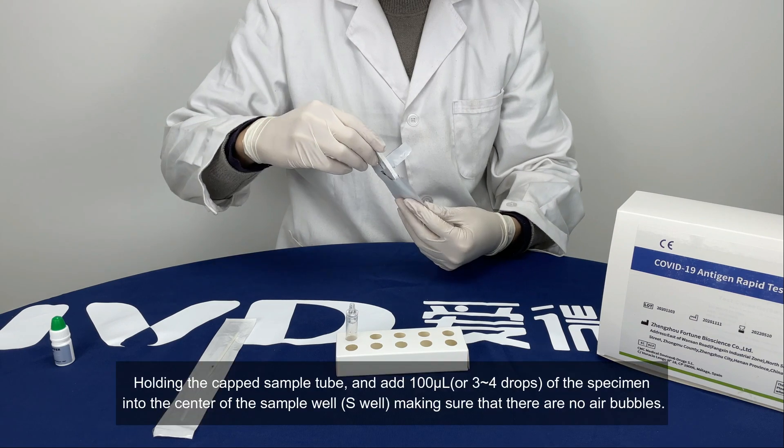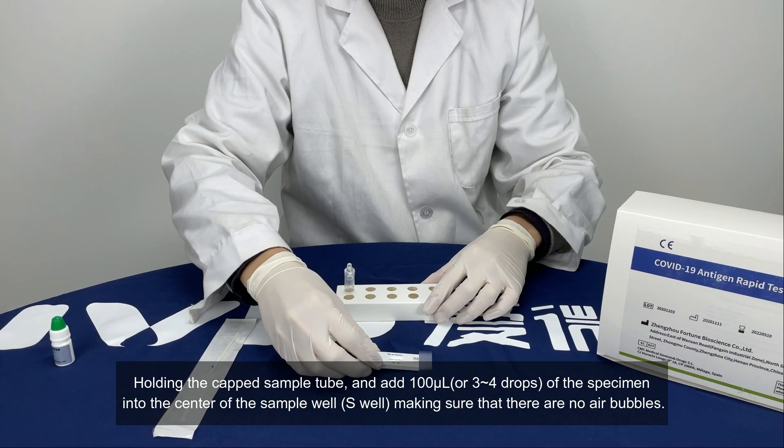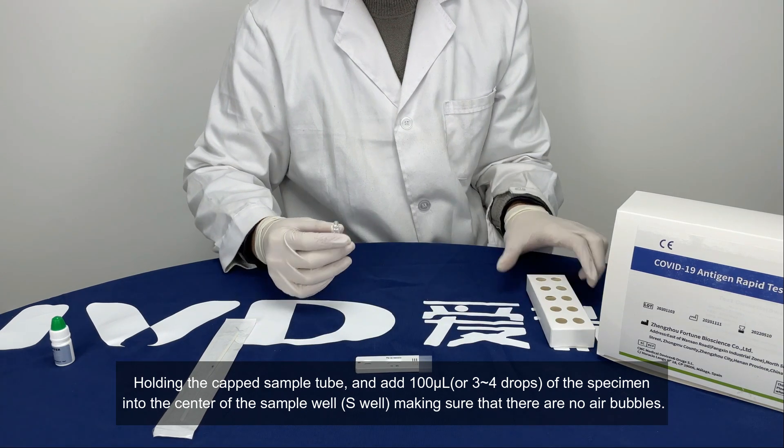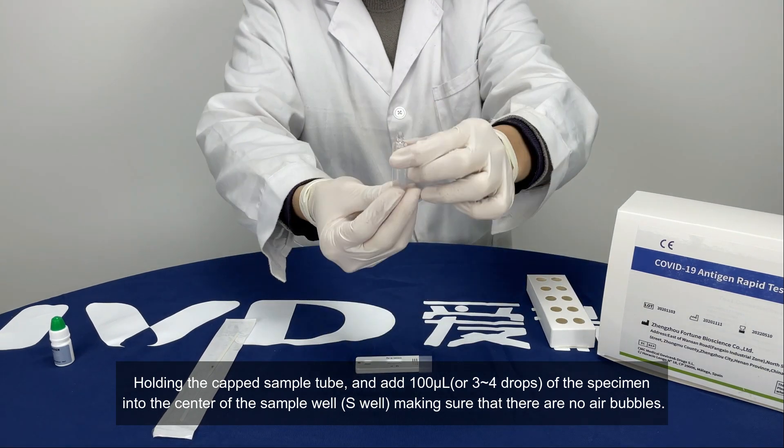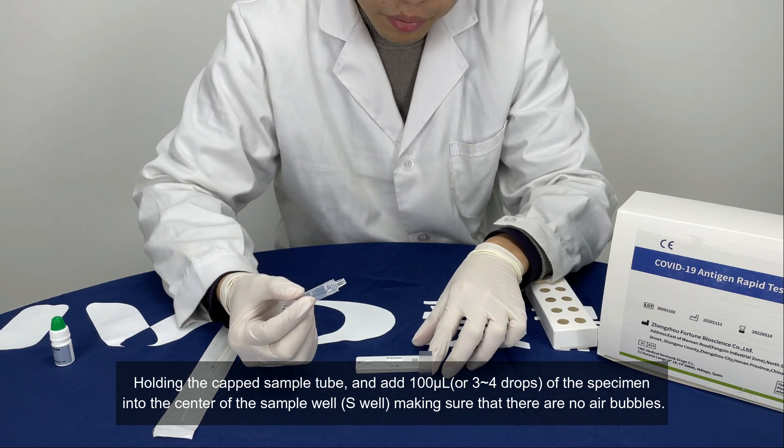Holding the capped sample tube, add 100 microliters or three to four drops of the specimen into the center of the sample well, making sure there are no air bubbles.